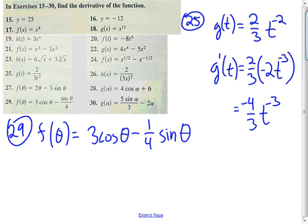All right, we know that the derivative of cosine theta is negative sine theta, and the derivative of sine theta is cosine theta.